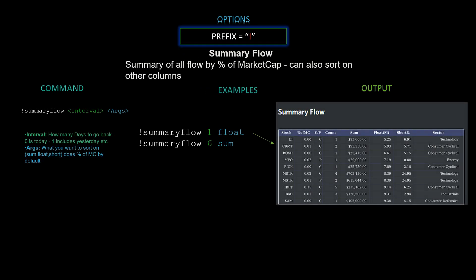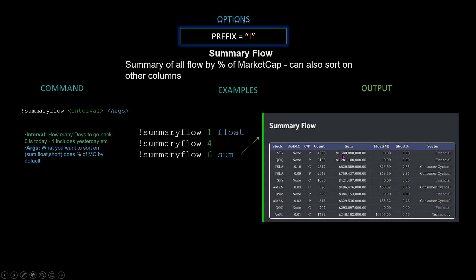Next we have summary flow — a summary of all flow by percentage of market cap, sortable by columns. The command is `!summaryflow [interval] [argument]`. I'd recommend running it by itself first to see the different categories, then organize as you want. For example, `!summaryflow 1 float` will organize in descending order by float — smallest to largest. If you do `!summaryflow 6 sum`, it organizes by the sum of market cap.